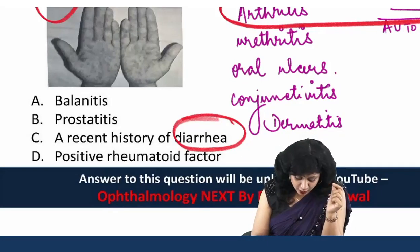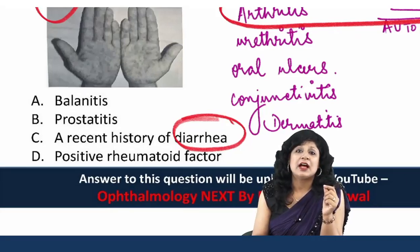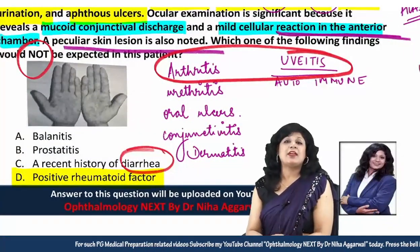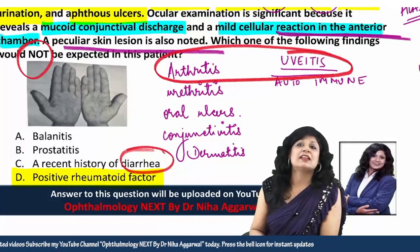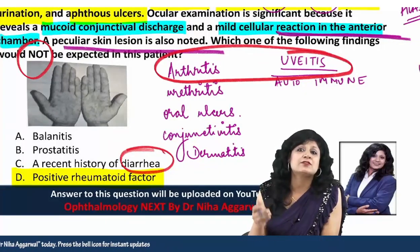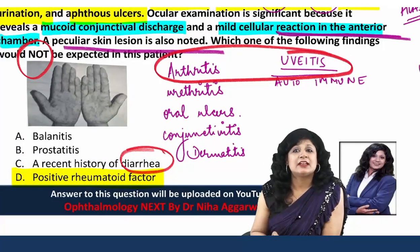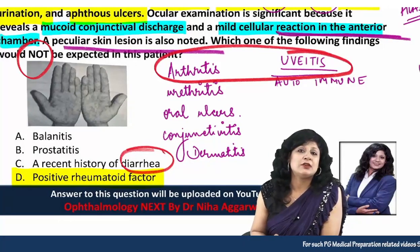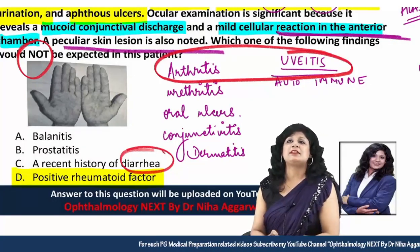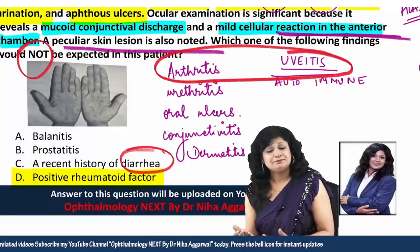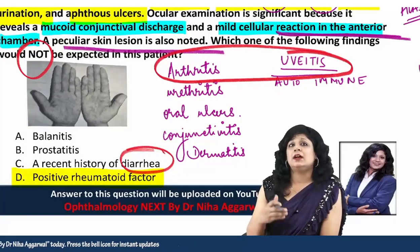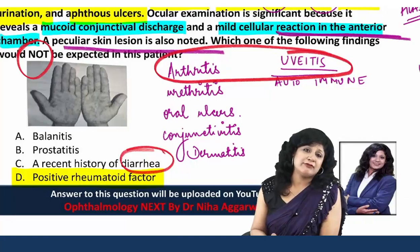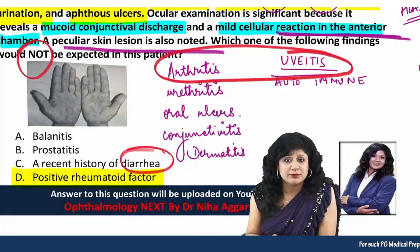In inflammatory bowel disease — ulcerative colitis or Crohn's disease — we can have uveitis and arthritis together. Option D is positive rheumatoid factor, and the answer is that this is NOT expected. Uveitis with arthritis is common in seronegative spondyloarthropathies, which by definition means the absence of rheumatoid factor. It could be HLA-B27 or HLA-B51 positive, but definitely not rheumatoid factor positive.